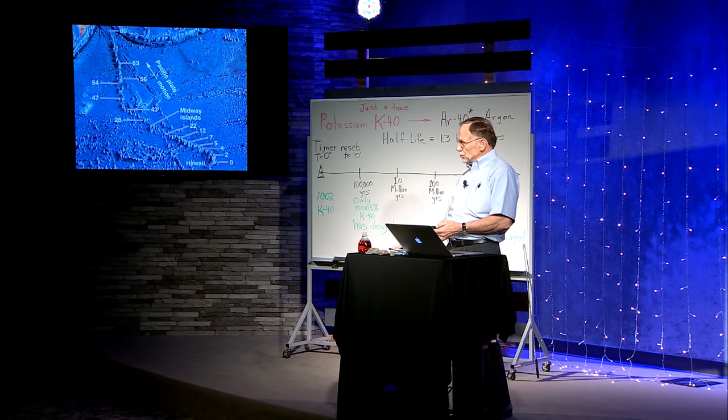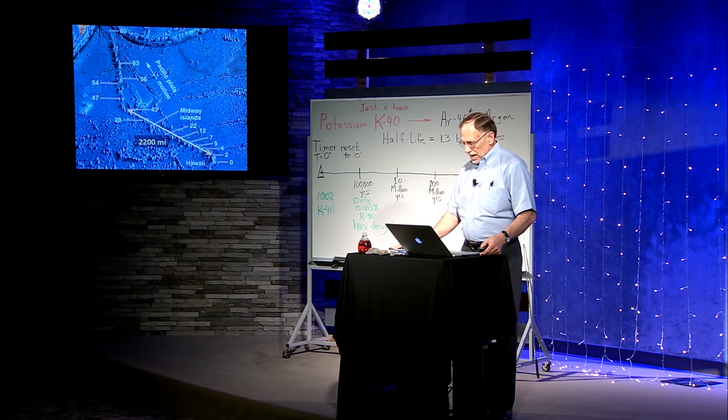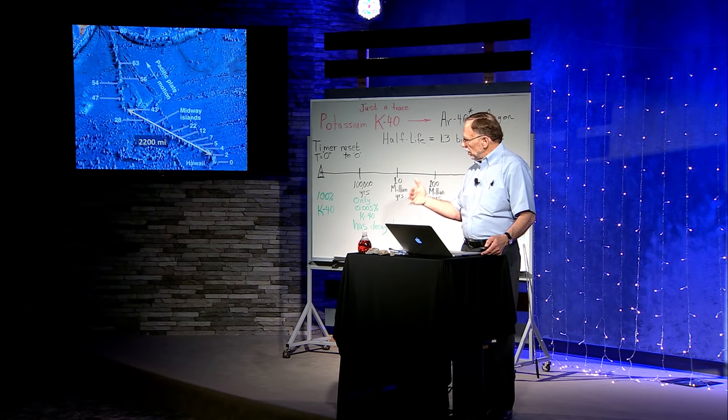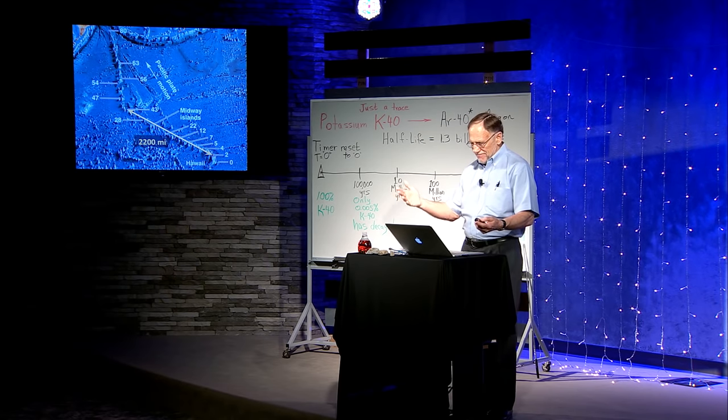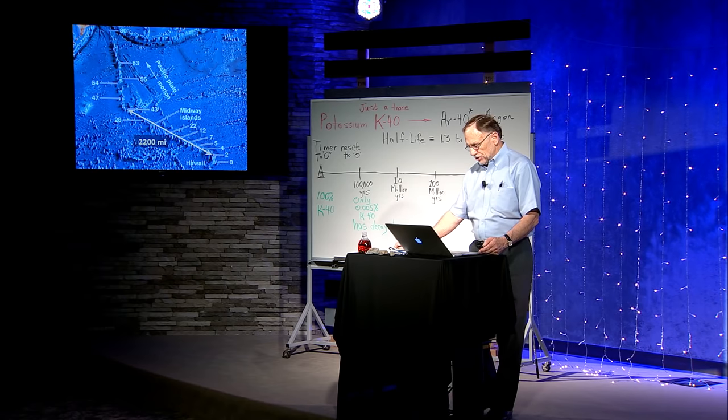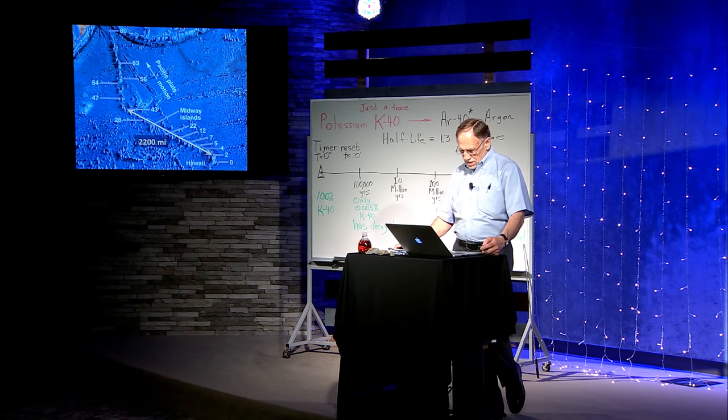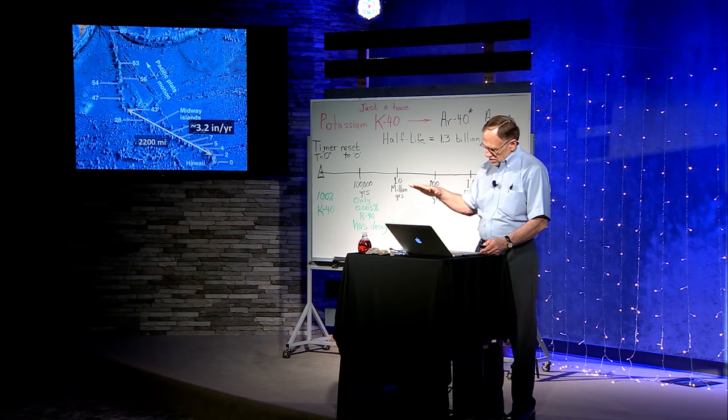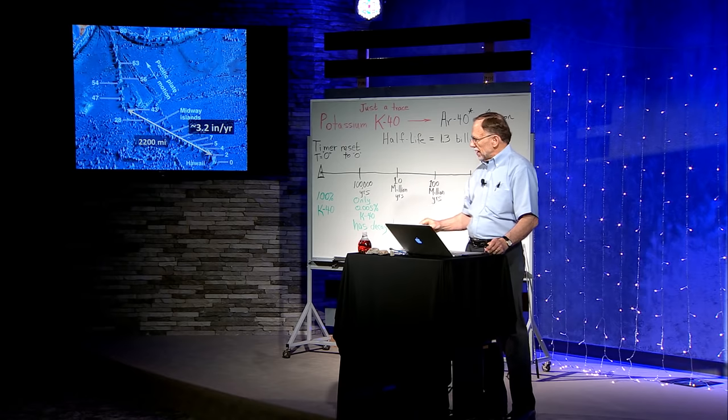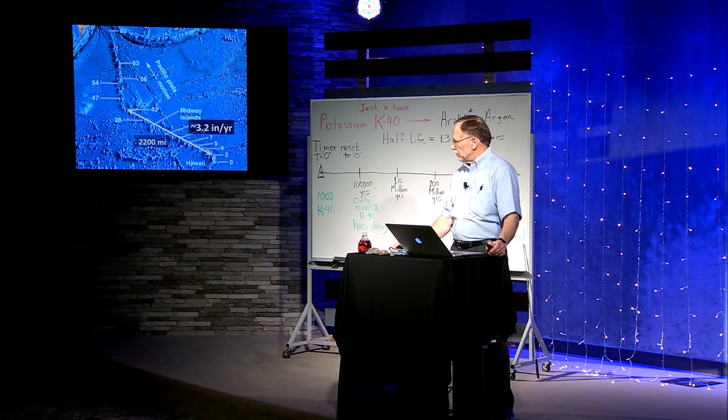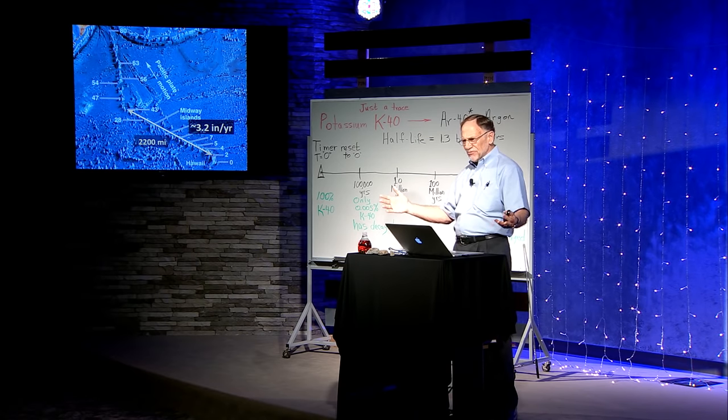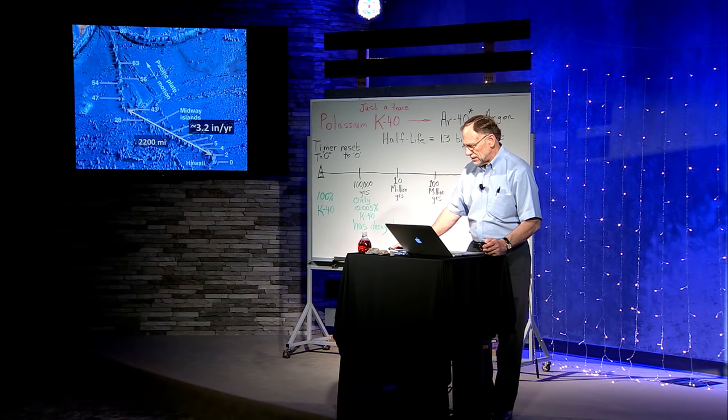Because we're getting ages, we can calculate a rate at which that plate is moving on average. So there's 2,200 miles from the Big Island to the bend, and the average motion to the northwest is about 3.2 inches per year. So we get a piece of information to understand the rate of a process.